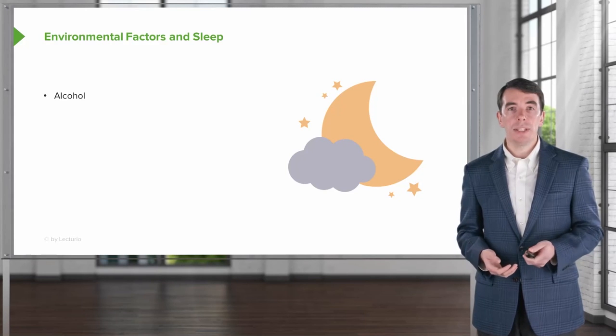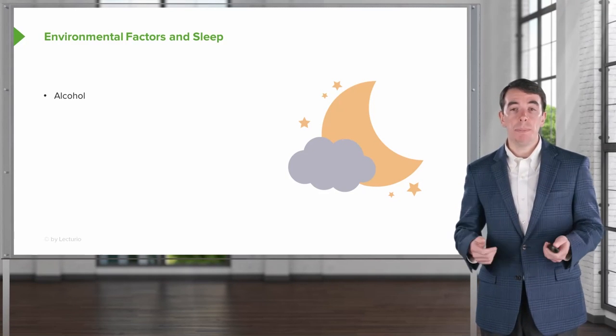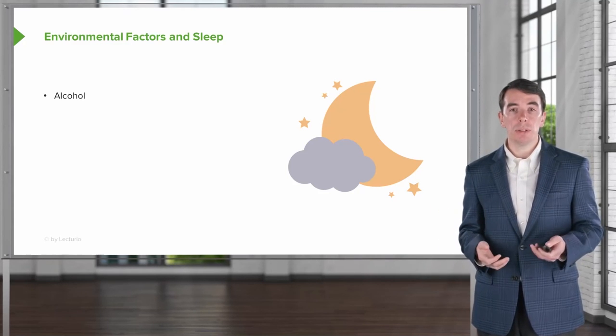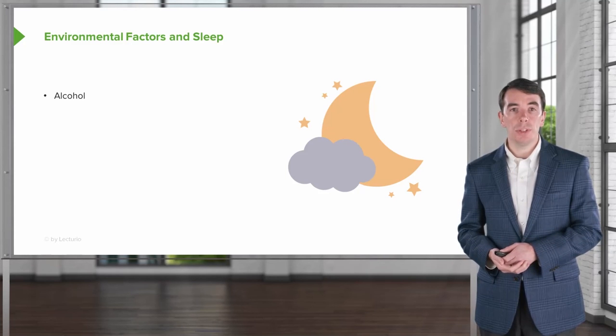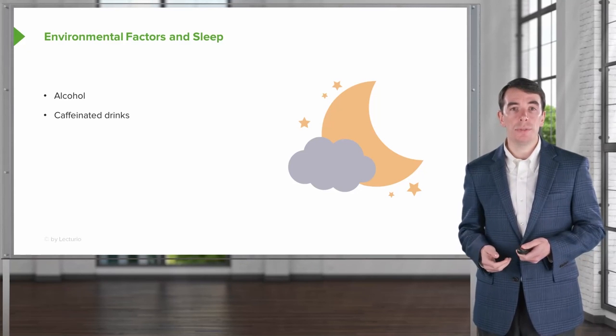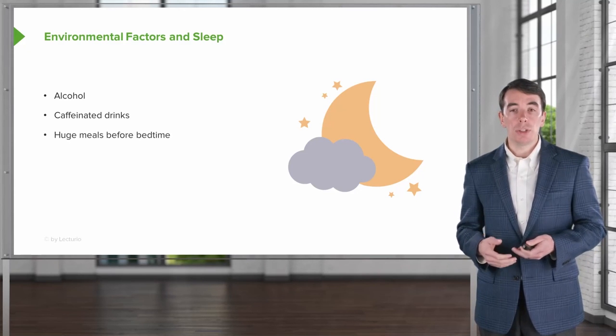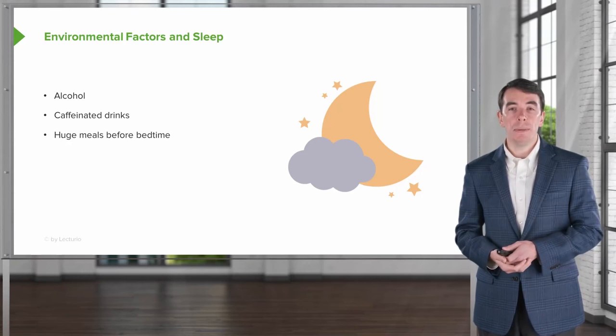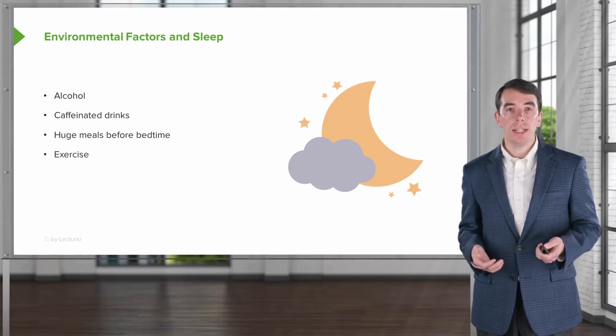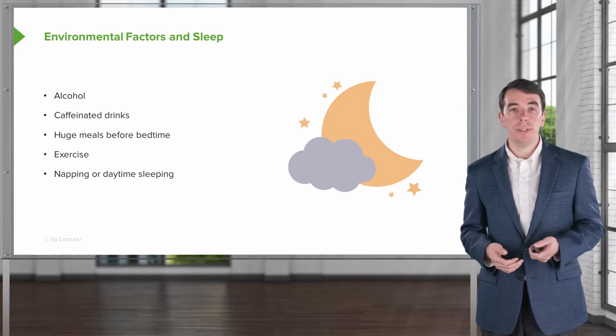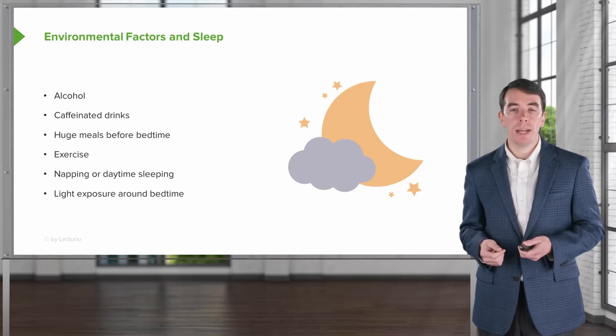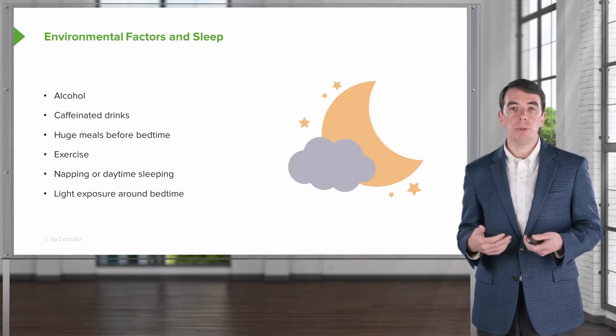Now let's talk about some of the environmental factors that are associated with sleep and impairments in sleep. Alcohol can significantly change sleep and reduce the amount of REM sleep that the body will experience over the course of night. Caffeinated drinks change our ability to get to sleep and maintain a high quality of sleep. Large meals before bedtime change the ability of the brain and body to get into that REM sleep and the duration of slow wave sleep. Exercise can impact sleep. Napping during the day can impact sleep. Light exposure around bedtime also changes activity of that suprachiasmatic nucleus and can alter the ability to get to sleep.